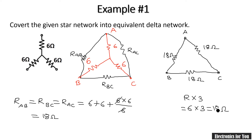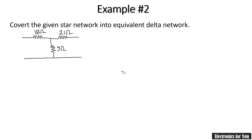A balanced star network is converted into a balanced delta network by the formula R multiplied by 3. Here the R of the star network was 6 ohm, and therefore each resistance will be of 18 ohm — 3R is the solution. In this way a star network can be converted into delta. But this was about the balanced case. Now let us talk about another circuit which is not balanced, meaning the resistances are of different values.